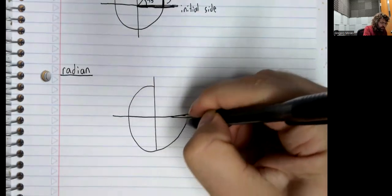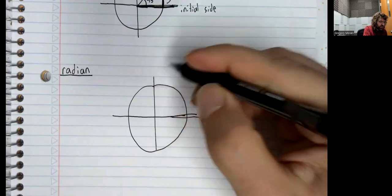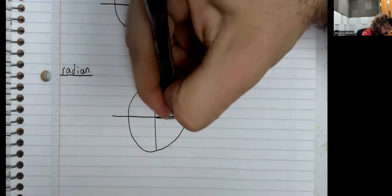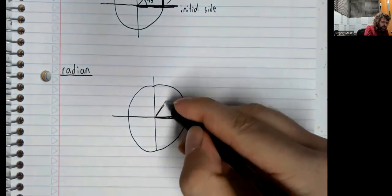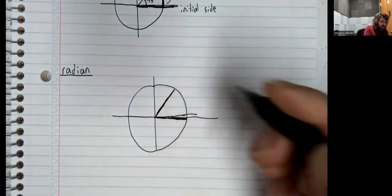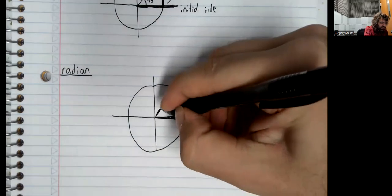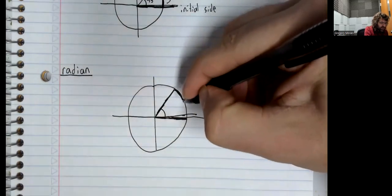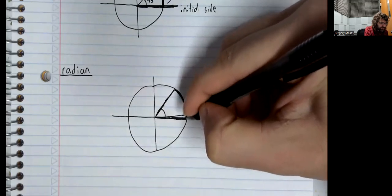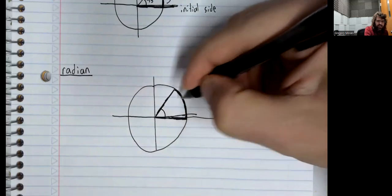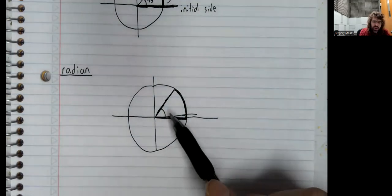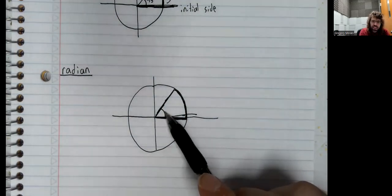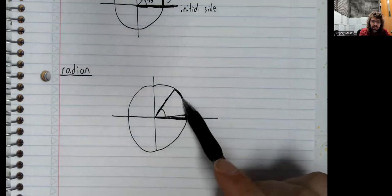So we've got this unit circle. We've got our initial side. We've got our angle. And that angle creates this arc. And we're going to define this angle in radians to be the length of this arc segment.